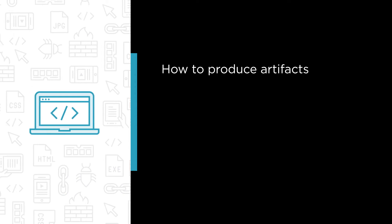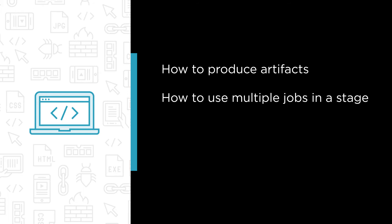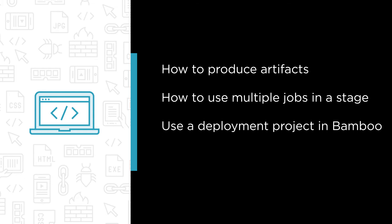We'll learn how to produce artifacts in Bamboo to share with subsequent parts of a pipeline or to view within Bamboo, and how to use multiple jobs in a stage to execute parts of a pipeline in parallel. We'll use a deployment project in Bamboo to handle deployment of an application to multiple environments, including Microsoft's Azure, and see how the status and history of releases to environments is made readily visible in Bamboo.